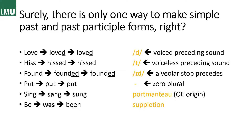We have portmanteau past forms — for example 'sing,' 'sang,' 'sung' — which again come from Old English and from the declensions and conjugations of that language. And the suppletive morphemes mentioned before: 'be,' 'was,' 'been' — with different etymological origins for forms of the same verb. They just came together at some point to form this one conjugation, and every student simply has to learn it by heart. There is no logical reason for this other than the different etymological origins.